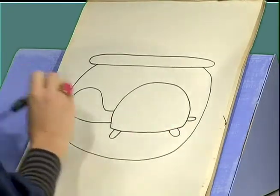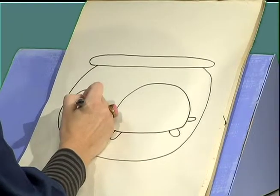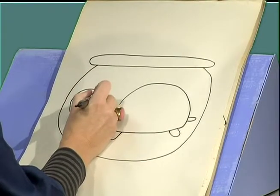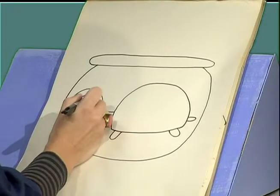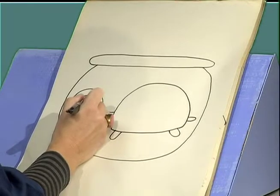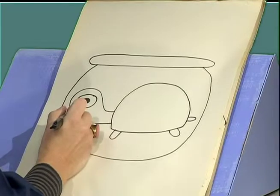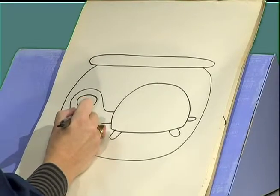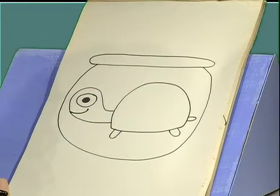And now we're going to add his eye onto his head. So draw a circle right there. Now add another circle in the middle. Color that in. I think he needs a mouth. So let's do it right here. Curve it up like so. Oh, you can see the turtle.